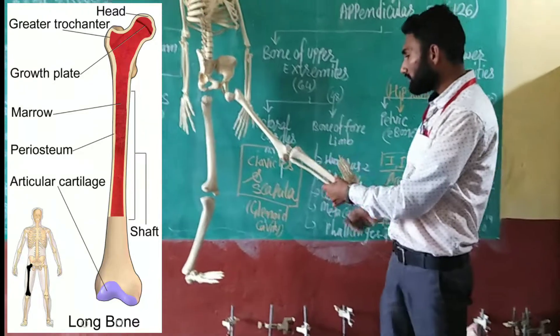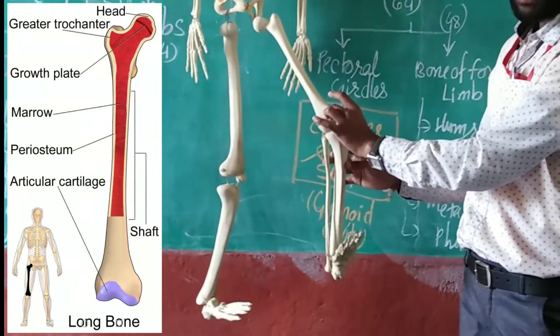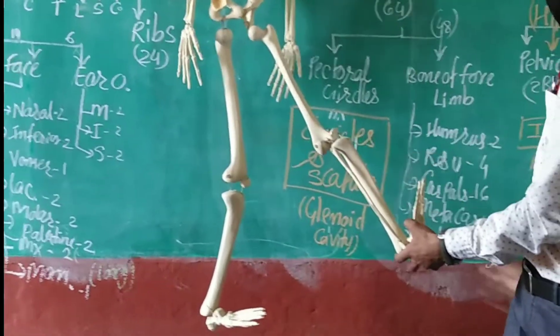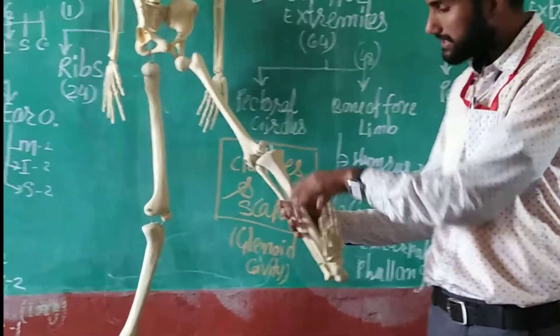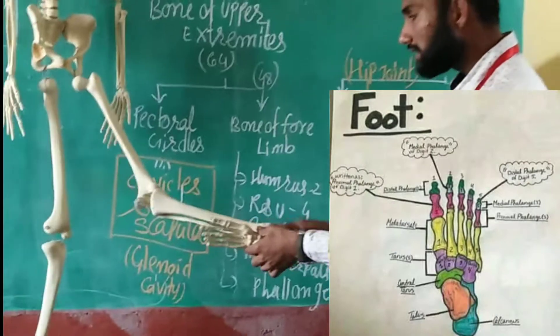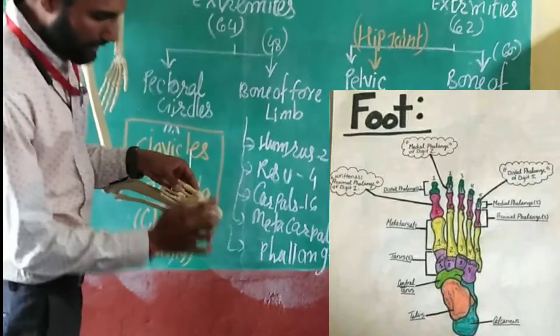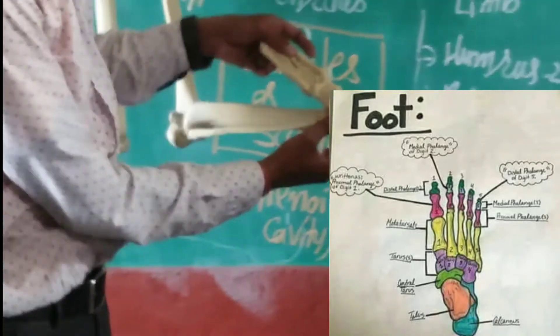The bones of the lower limbs include the femur, fibula, and tibia. The tarsals are also present. There are two parts of tarsals, and the total tarsals count contributes to the lower extremity bones.